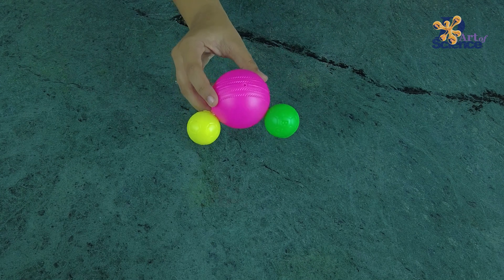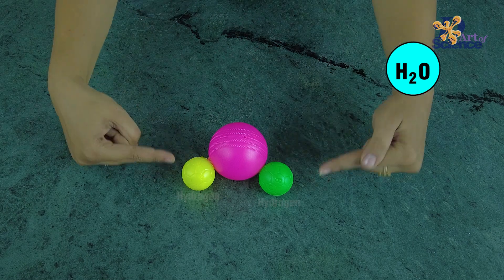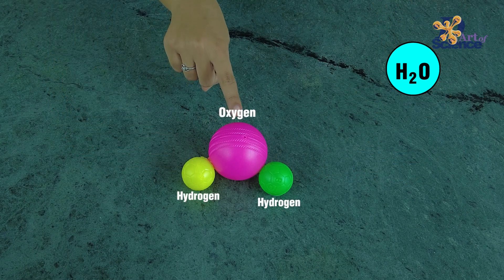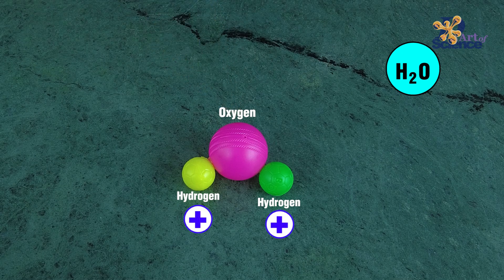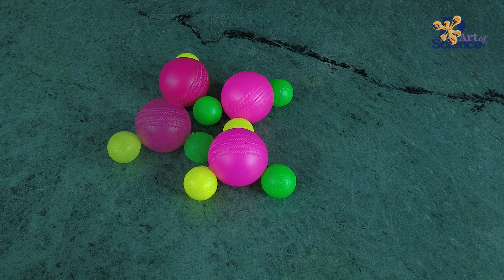Turns out water is very special. The molecular formula of water is H2O. It has two hydrogen atoms bonding with one oxygen atom. The hydrogen atoms are positive while the oxygen atom is negative.